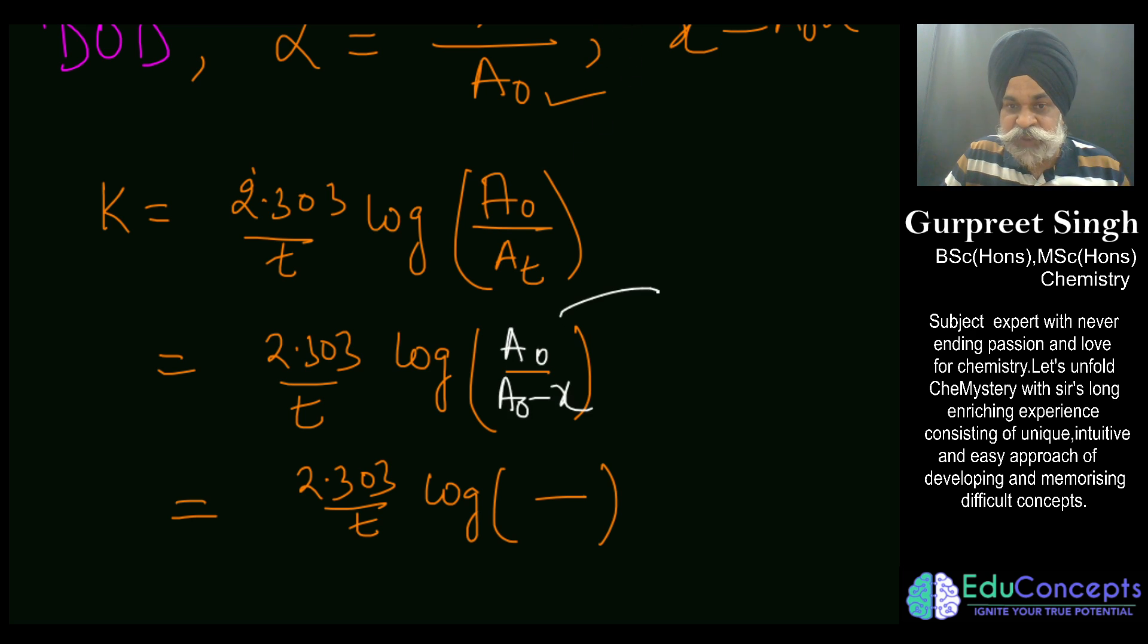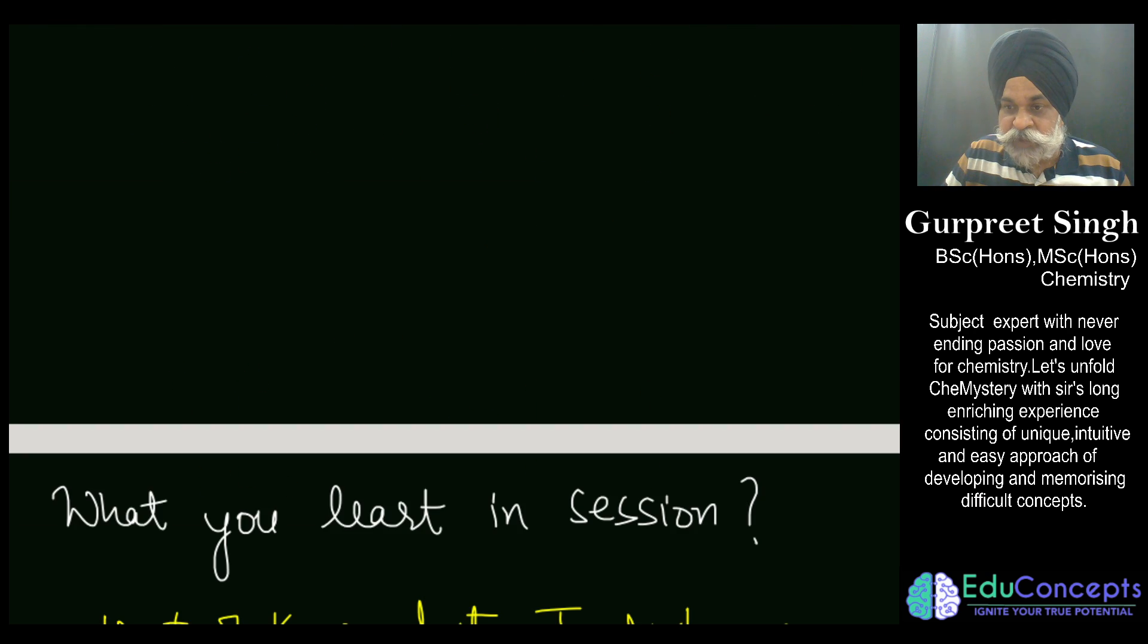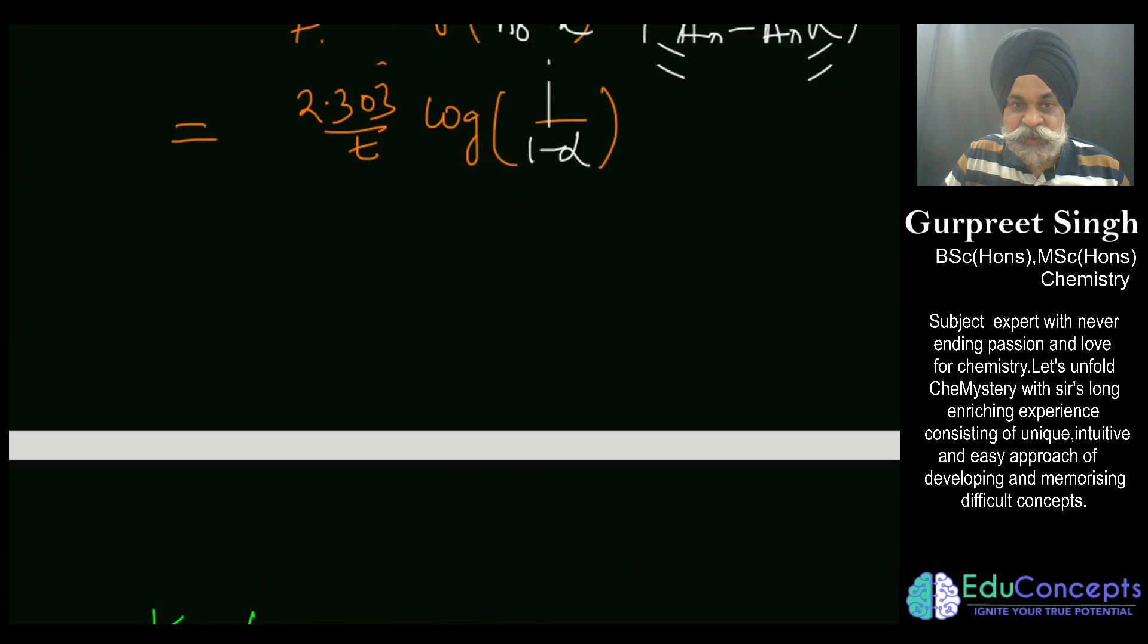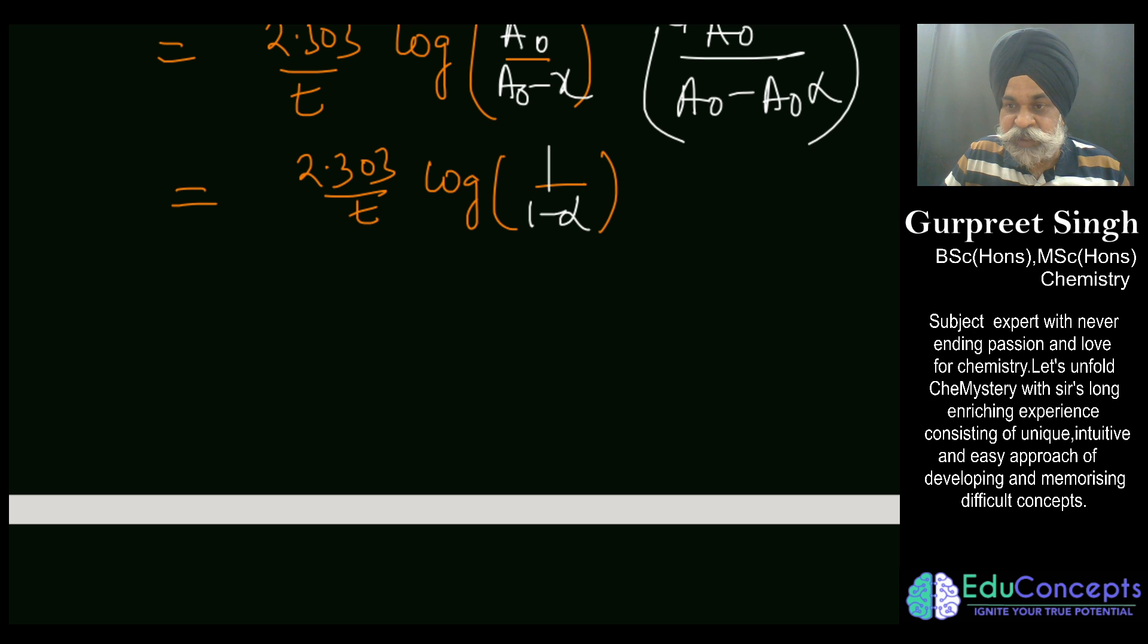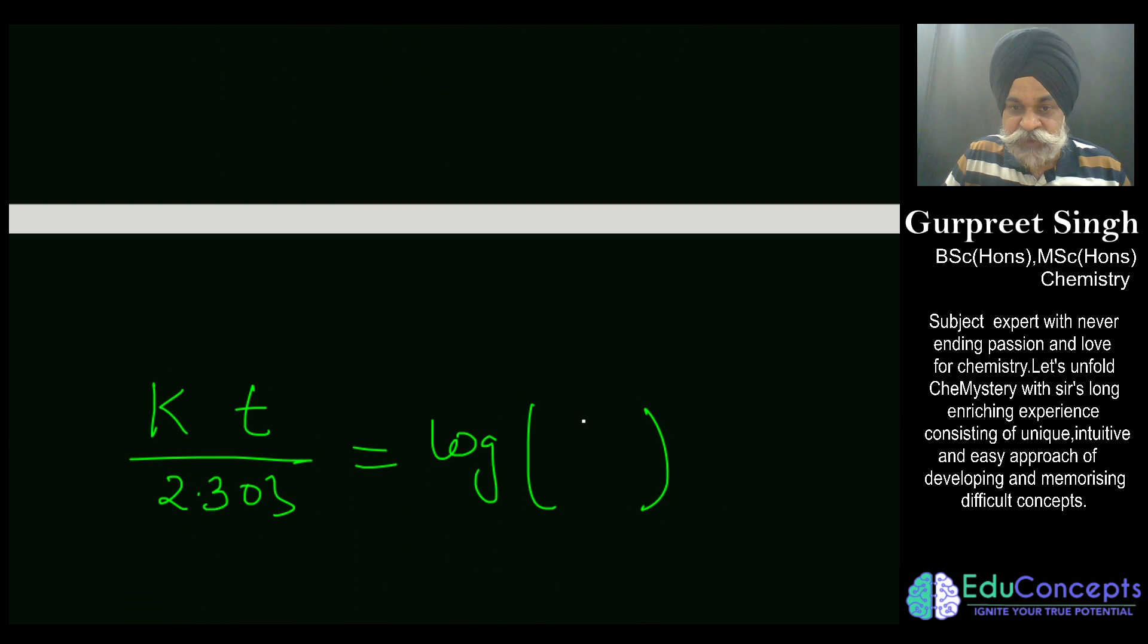Now if I take A₀ common this becomes 1 minus alpha, so the equation rolled down to this particular thing. So what we shall be getting here is this equation: 1 upon 1 minus alpha. So this is being given 2.303 and this is 0.4771, this got cancelled. So log 3 is 0.4771.